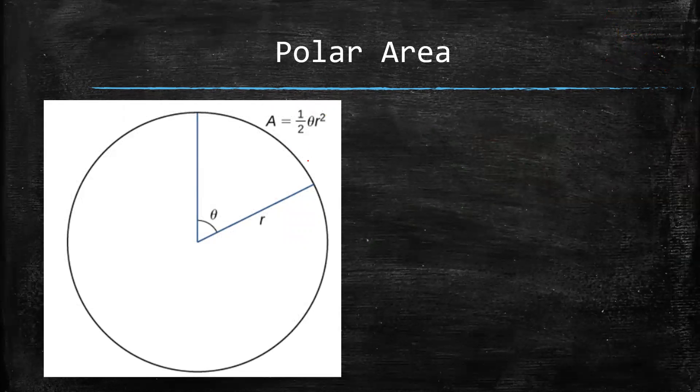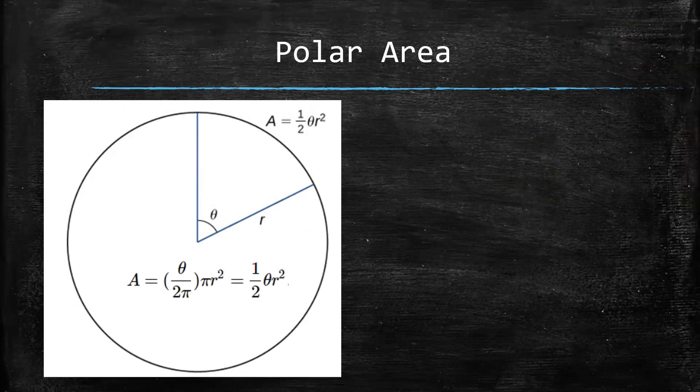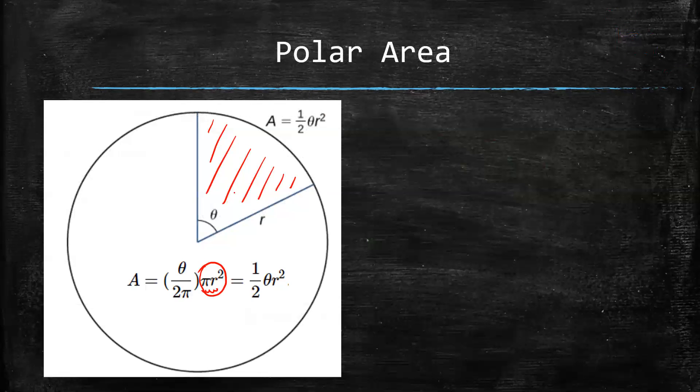So first of all, area of a slice of a circle is going to be given by the proportion of the circle that this is times the area for the circle. The area for the circle is pi r squared. So this is one full circle. Now you have to take the full circle and basically take the proportion of it that you see here.